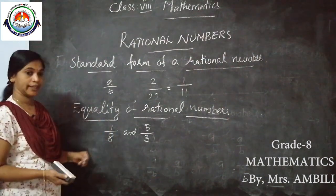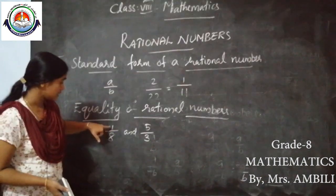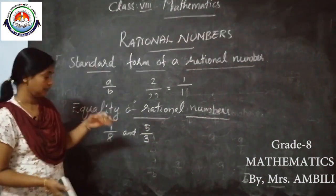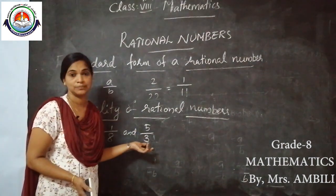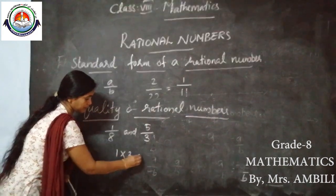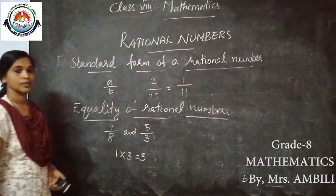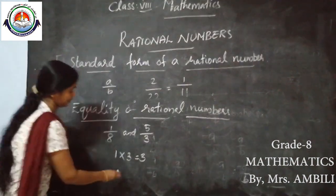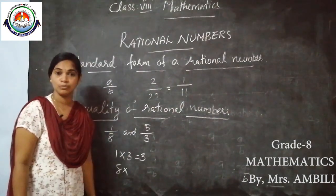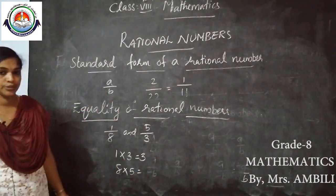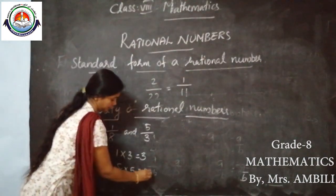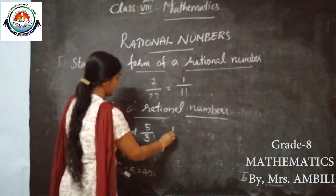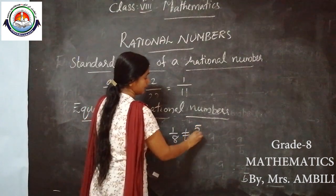Cross multiply means we find the product of the first rational number's numerator with the second rational number's denominator: 1 × 3 = 3. Then the first rational number's denominator with the second rational number's numerator: 8 × 5 = 40. These are not equal, therefore we can say that 1/8 is not equal to 5/3.